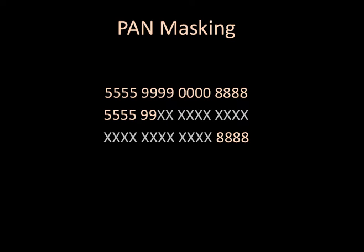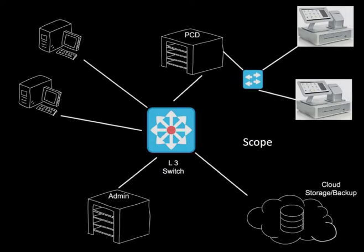When the PAN is absolutely needed by identified individuals for defined business processes, the entire PAN can be shown. Under other circumstances, paper or electronic media can display only the first six characters or the last four.